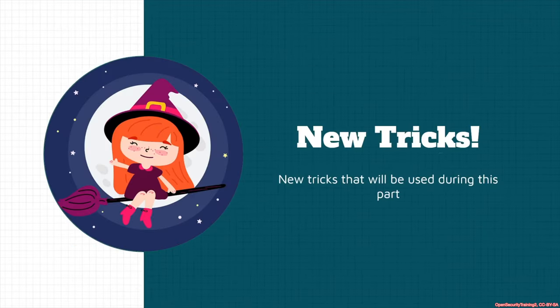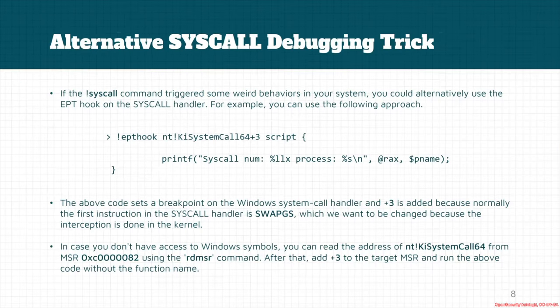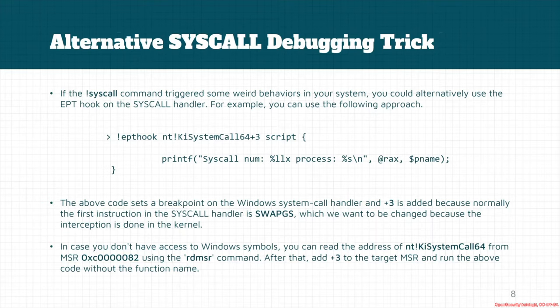About the new tricks: if you're using the syscall or bang-syscall command and it triggers some rare behaviors in your system, there are alternative ways of debugging system calls. One of them is using EPT hooks. We can use classic EPT hooks to debug system calls — for example, using a command that sets a breakpoint on the Windows function responsible for handling system calls.